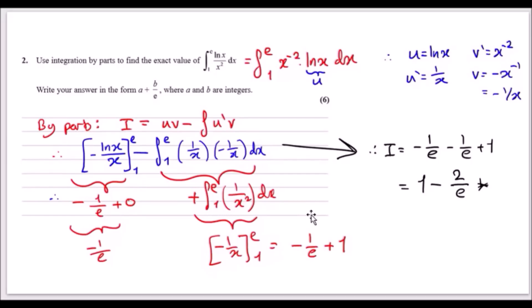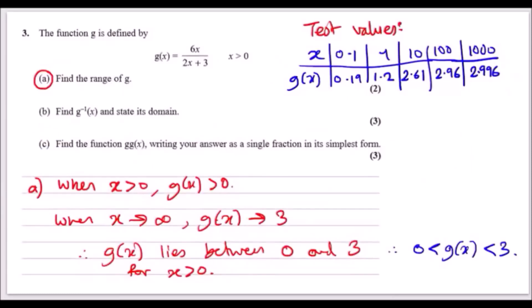If you're enjoying this, please give me a like. Now question three: the function g is defined by a given equation with domain x > 0, meaning x values can only be positive. Find the range of g — essentially what values g can take for a given x.